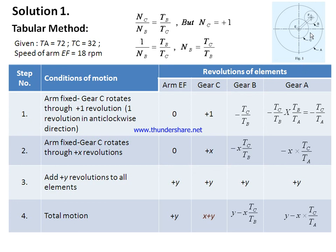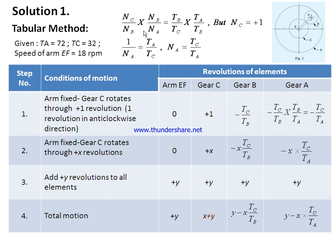The speed of gear B is minus Tc by Tb. Take the ratio between Nc and Nb, which equals Tb by Tc. Since Nc is one revolution, Nb equals Tc by Tb. Gear B rotates in the clockwise direction, hence the minus sign. For gear A, the speed is minus Tc by Ta, obtained by taking the ratios Nc/Nb and Nb/Na. Gear A also rotates in the clockwise direction.